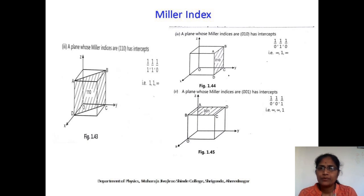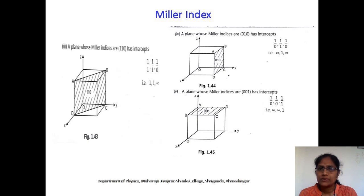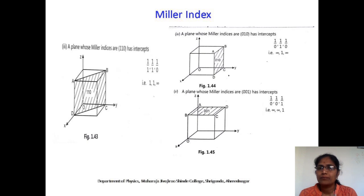The next example is a plane whose Miller indices are (0 1 0). The given plane will intercept only the y axis and will be parallel to x and z axes. Taking reciprocals: 1/0 = infinity, 1/1 = 1, 1/0 = infinity. So the intercepts are infinity, 1, and infinity along x, y, and z axes. The given plane intersects only the y axis at 1a. Such a plane is shown in figure a, b, c, d in figure 1.44.